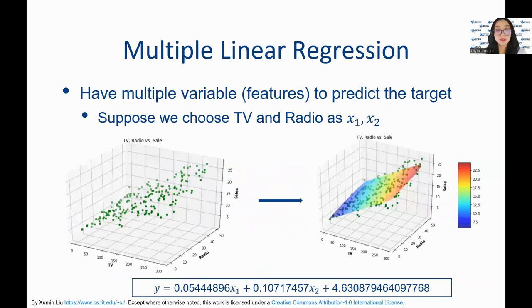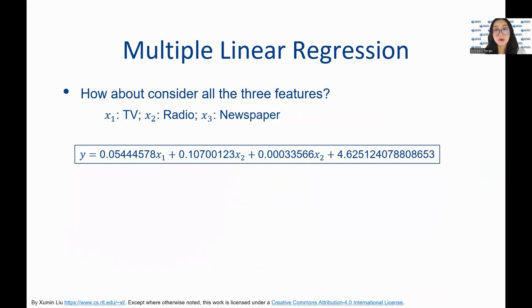Now we will review multiple linear regression which includes more than one feature in the model. The figures show the plot of the data points and the learned model in a 3D space. Now we will consider all three features such as TV, radio, and newspaper against the targeted variable sales.